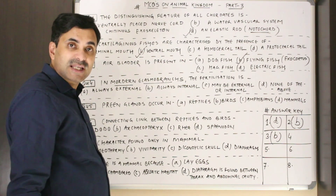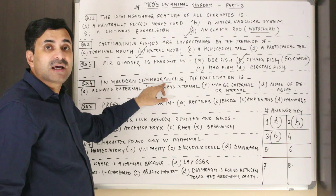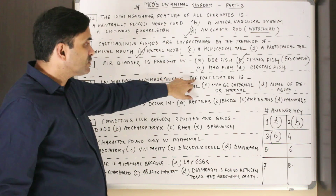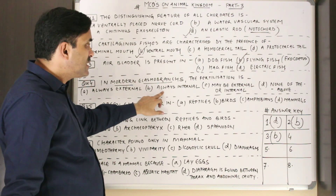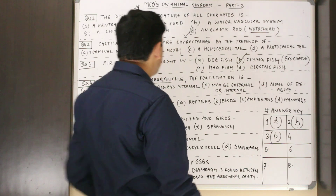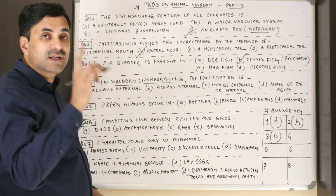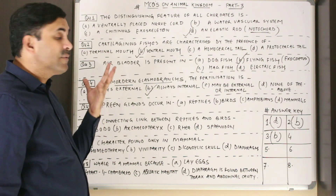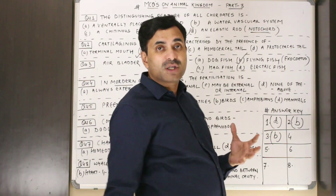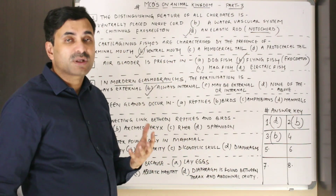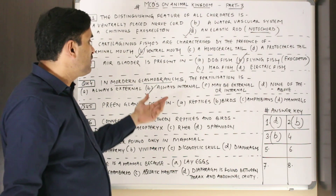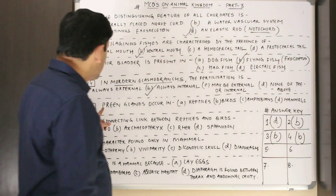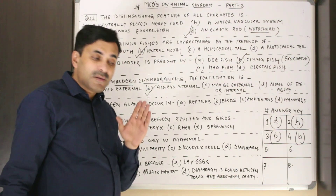Question number four: in modern elasmobranchs, fertilization is always — external, always internal, maybe external or internal, or none of the above? Elasmobranchs are cartilaginous fishes. In modern elasmobranchs, fertilization is always internal because the males have a copulatory organ called the clasper, which introduces male gametes into the female. Question number four answer: B.